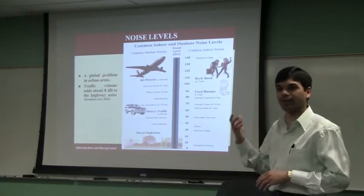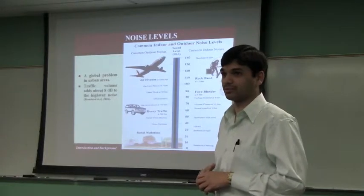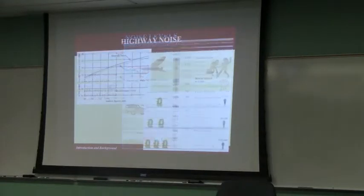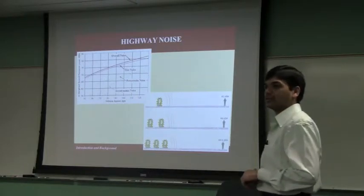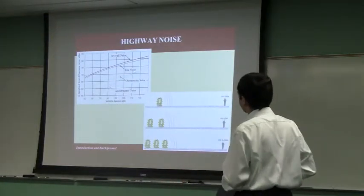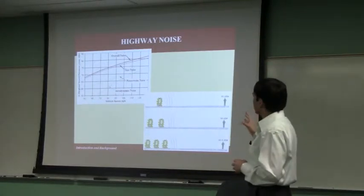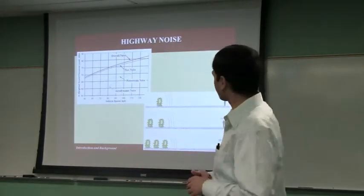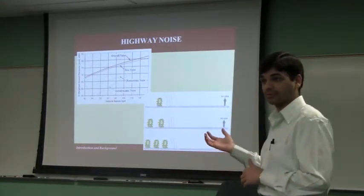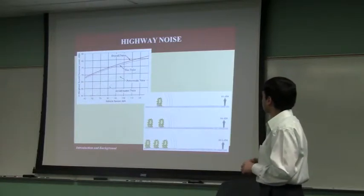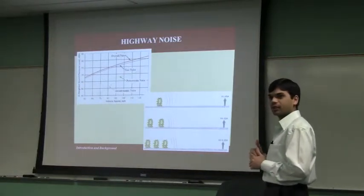If you have any questions in between, you can stop me — it can be more of an interactive session. There are three different noise elements that acousticians account for: one is aerodynamic, another is powertrain, and the third is tire noise. Pavement noise was not actually part of this noise characterization until about 1998 or 1999, when pavement noise was accounted as part of tire noise, and we still account it as part of tire noise even today. The tire noise curve is very close to the overall noise.